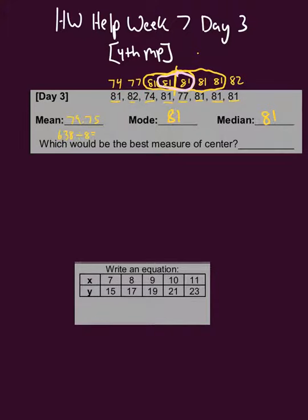You can also choose mode. We said we would choose mean as a possibility, and the reason why you could also choose mode is because there are five eighty-ones. That's more than half of the total numbers - five out of eight - so mode would be an acceptable measure of center as well.